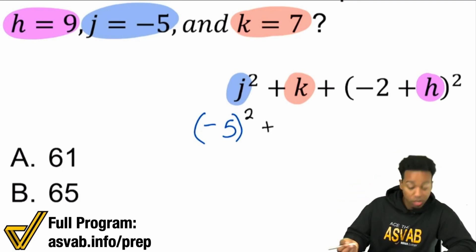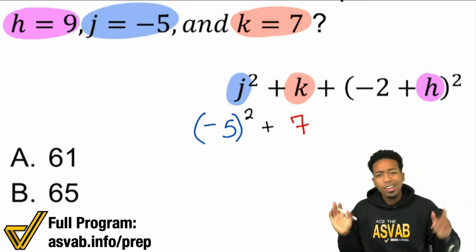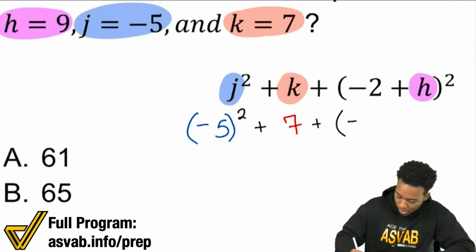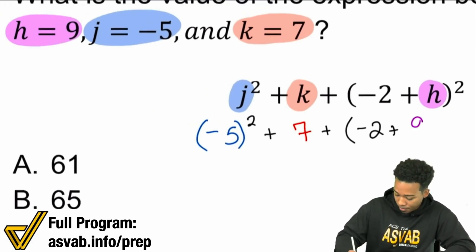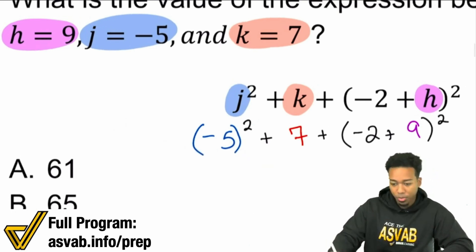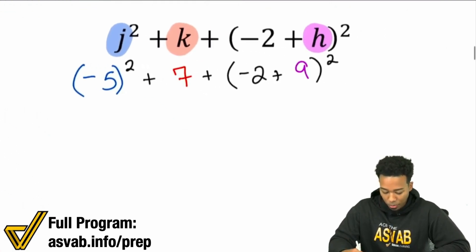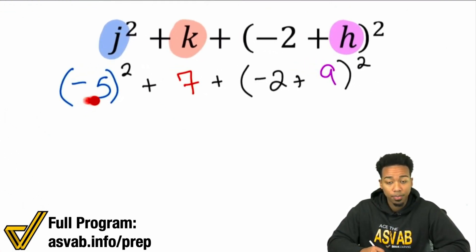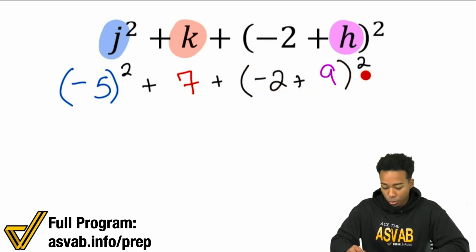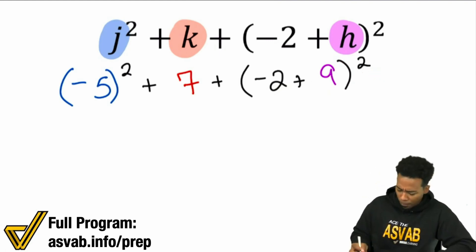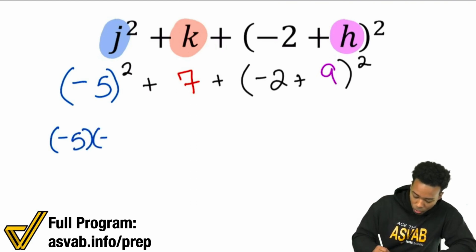Next, we plug in the rest of our values. k equals 7, so we write plus 7 — we're fine. Moving forward, we have plus negative 2, and then plus h which is 9. So we plug in 9, and then we square that whole group. Notice the whole negative 5 is being squared, and you have to evaluate the parentheses first before squaring. A mistake people make is trying to do 9 squared first and then adding negative 2 — that's not the case. The parentheses means you group it and then square the result. Squaring a number means multiplying it by itself twice.